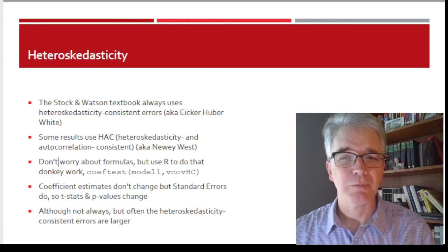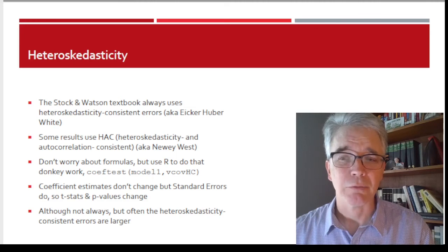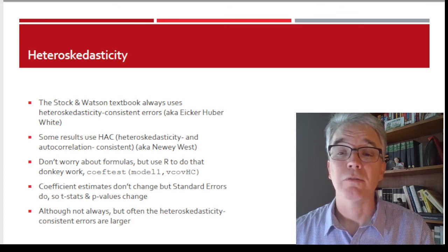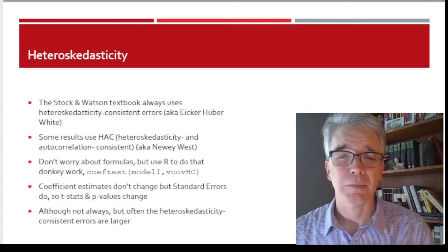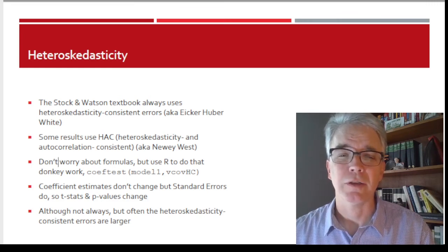But it's at least pretty straightforward to do it in R. And I'd recommend you make a habit of doing that every time. So it's the simple coeftest with variance-covariance heteroscedasticity correction. That's the vcovHC part of it.